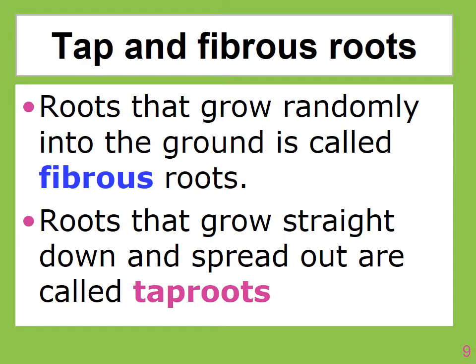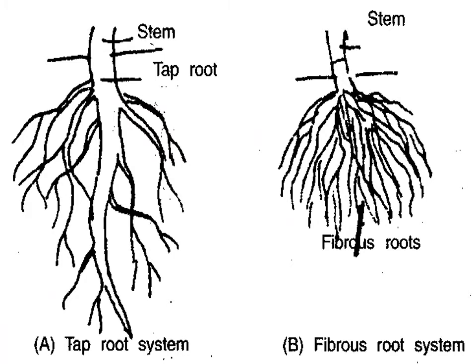Tap roots and fibrous roots — what are they? Roots that grow randomly into the ground are called fibrous roots. Roots that grow straight down and spread out are called tap roots. On the left we have a tap root, and on the right we have a fibrous root.